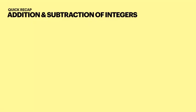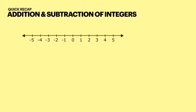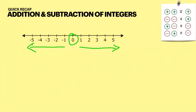Before moving on, let's do a quick recap of how to solve a problem on addition and subtraction of integers. For that we used to use the number line. The second most important thing was the sign table — which tells you what the final sign will be when two signs are combined.